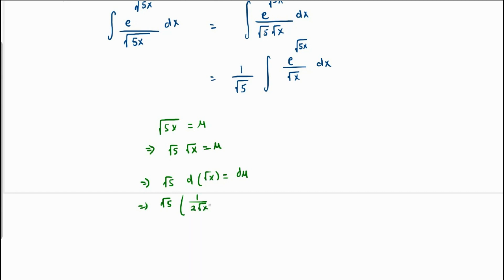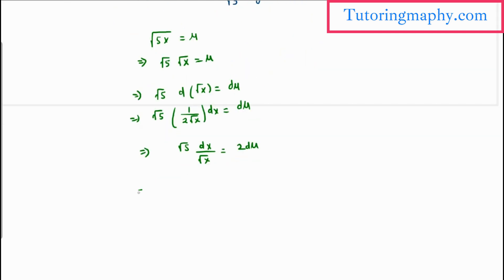If we multiply both sides by 2, we get root 5 dx over root x equals 2 du. If we divide both sides by root 5, we get dx over root x as 2 over root 5 du.